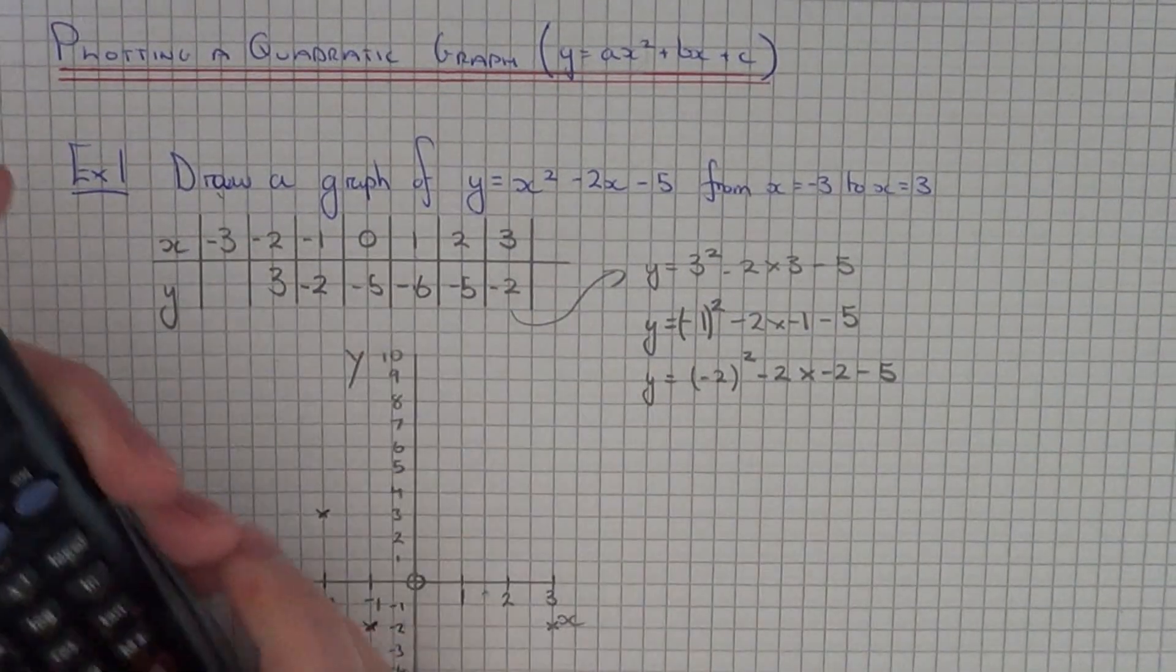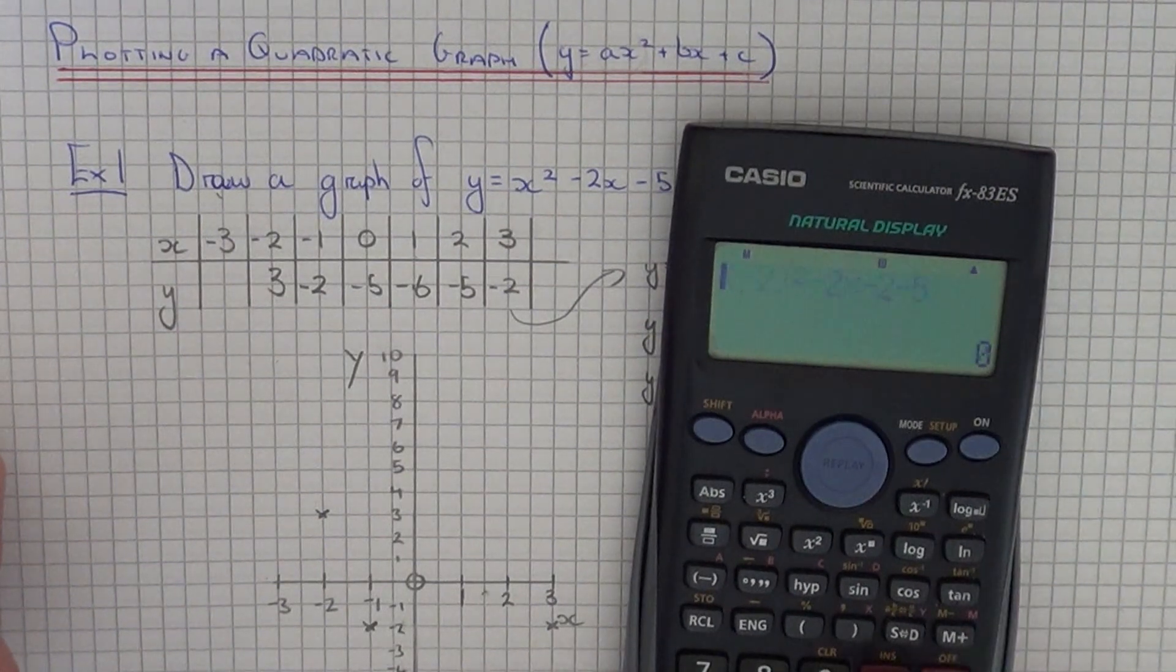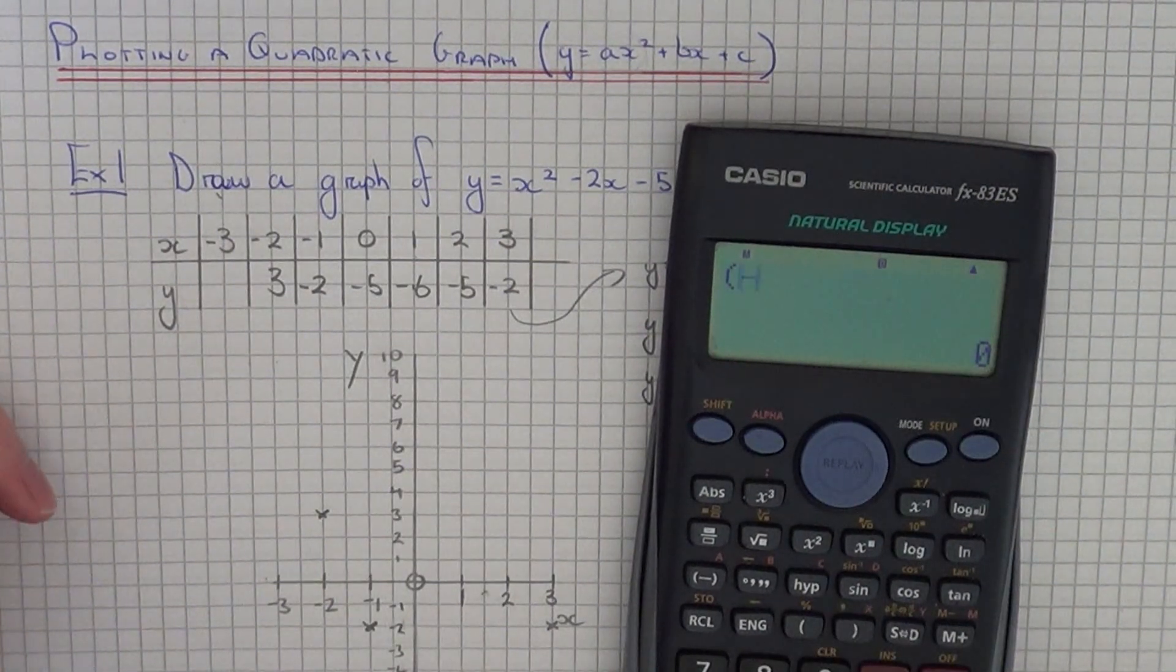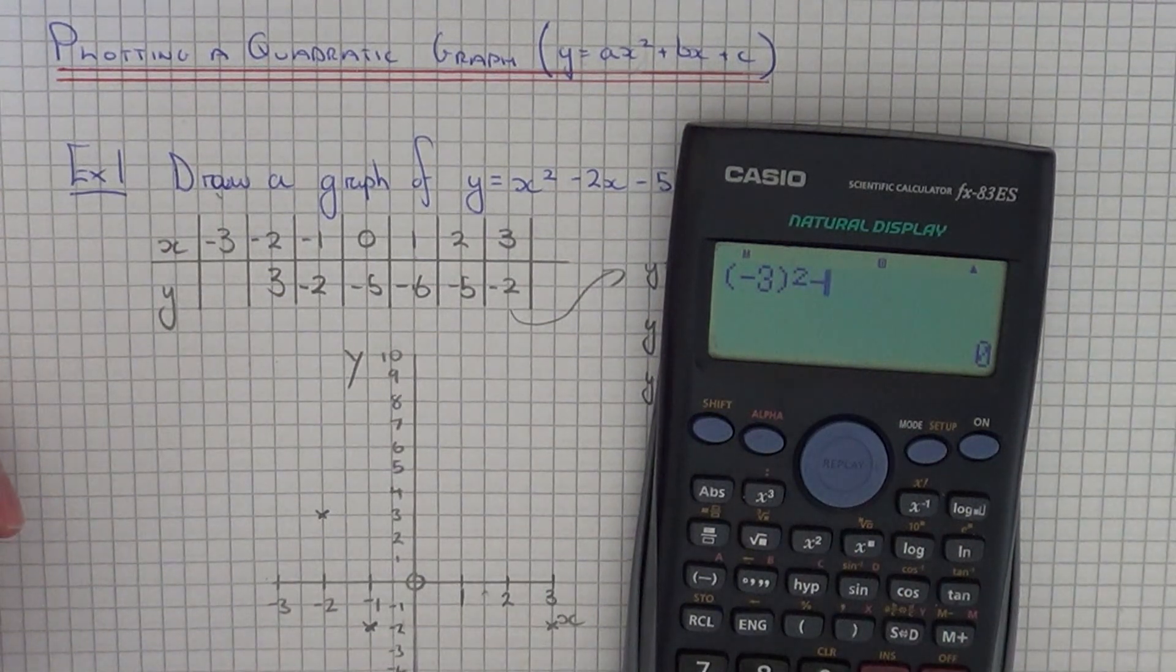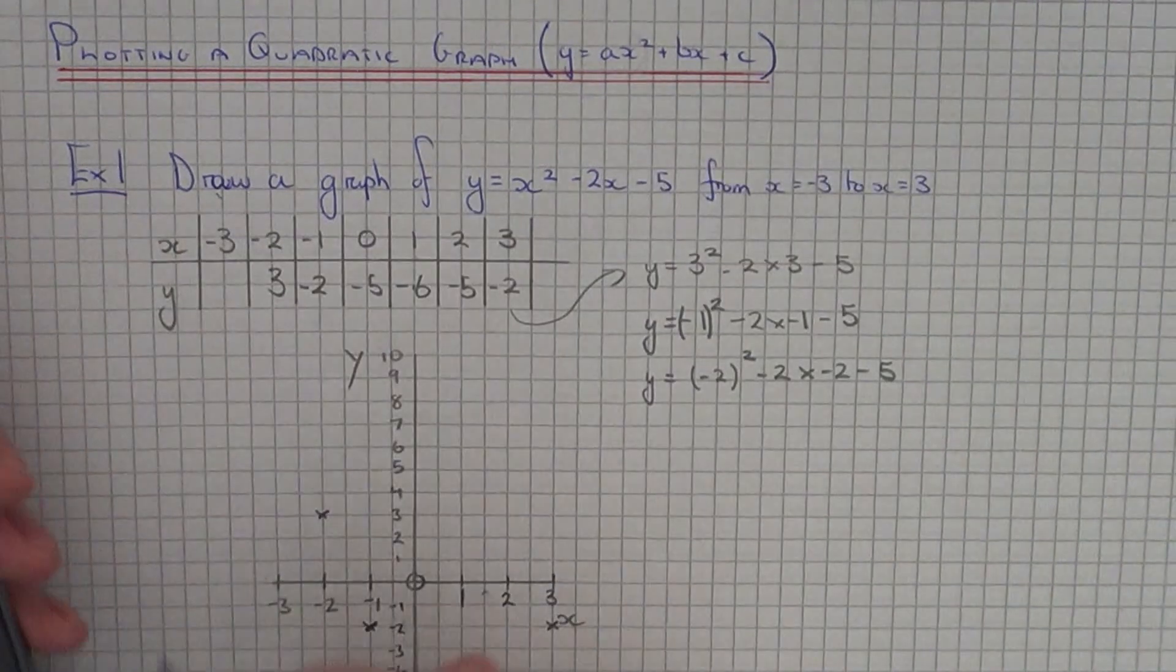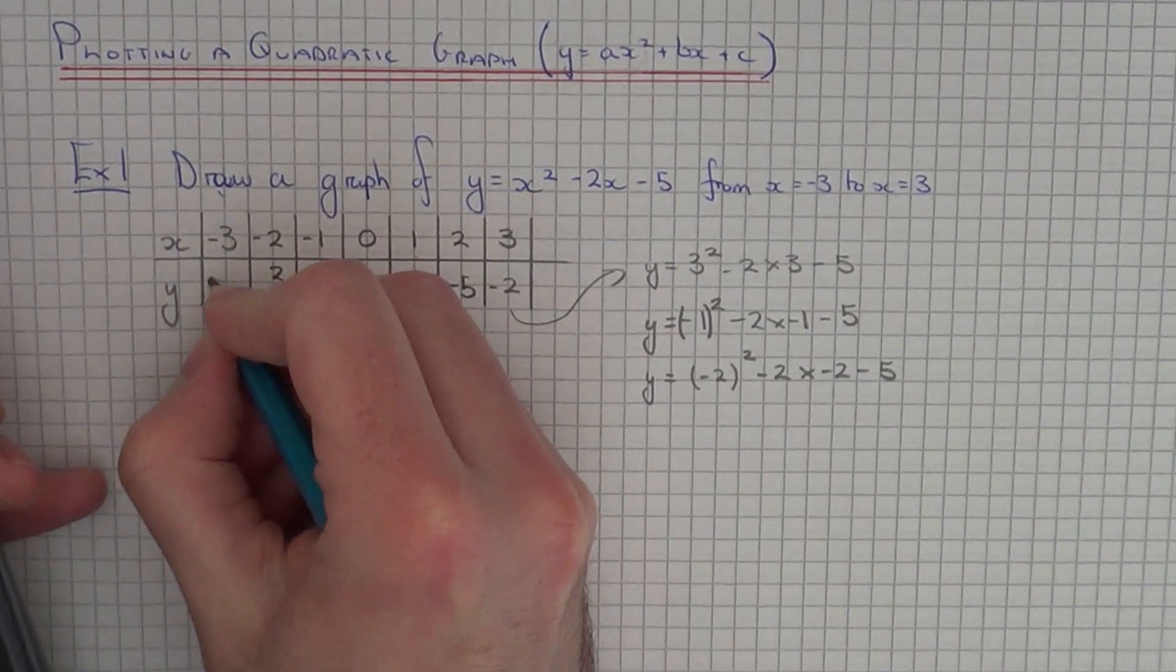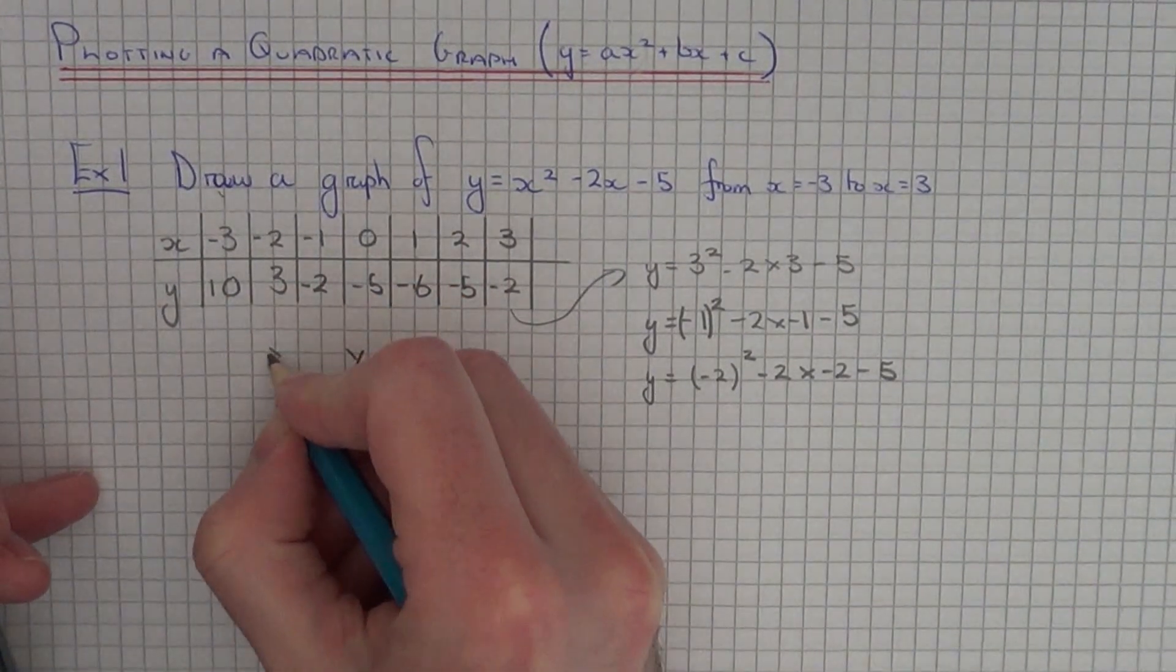And finally we've got x equals minus 3. So again just make sure you put the minus 3 in a bracket when you square it. And we get a y coordinate of plus 10. So our final point is minus 3, 10.